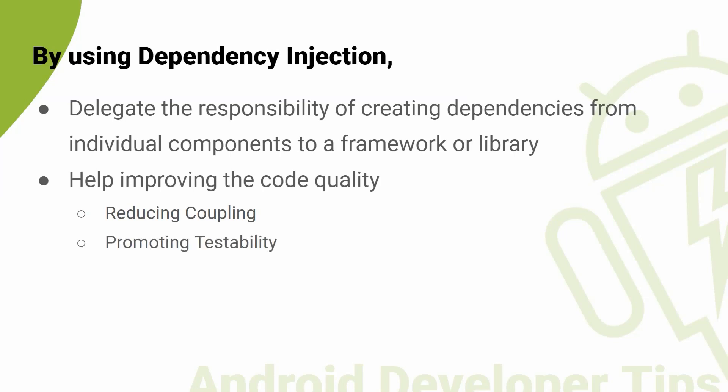DI can also promote testability by making it easier to isolate components and replace them with mock objects during testing. This makes it easier to write unit tests that validate the behavior of individual components and identify issues early in the development process. DI can also enable greater flexibility and adaptability in the code by making it easier to swap out components and modify the behavior of the application. This can be particularly useful in complex systems where requirements are likely to change over time. DI can also enhance code reusability by making it easier to use the same components in different parts of an application or different applications altogether.